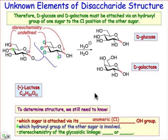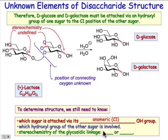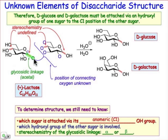The third issue we don't know is the stereochemistry at the alpha or beta position. Specifically, we don't know whether at the anomeric position on the left-hand side sugar, it's axial or equatorial — axial being alpha, equatorial being beta.